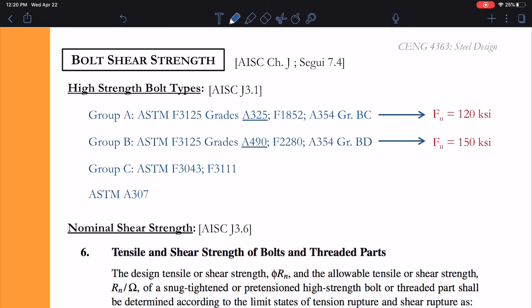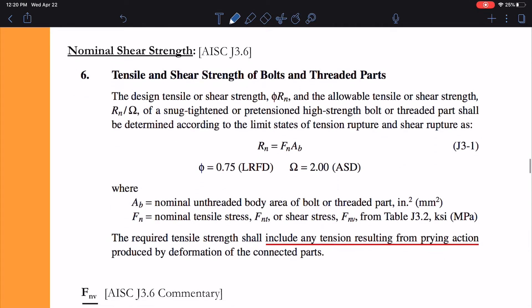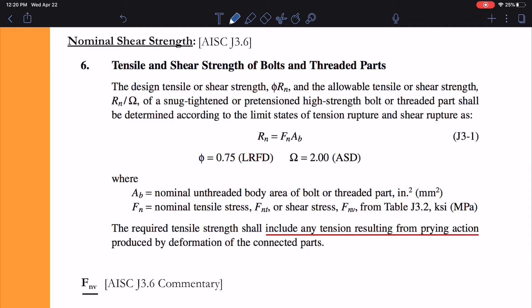Next we'll take a look at the nominal shear strength as given to us in section J3.6. The nominal shear strength is just equal to some nominal shear strength times the area of the bolt. A very straightforward calculation. Again, since we're looking at ultimate fracture of this bolt, we're going to take phi to be 0.75. And we'll talk about how we come up with F_NV, the shear stress in the bolt, in a second.